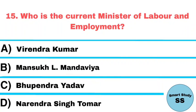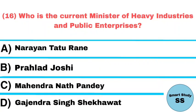Question number 15: Who is the current minister of Labour and Employment? Answer: Bhupender Yadav. Question number 16: Who is the current minister of Public Industries and Public Enterprises? Answer: Mahendra Nath Pandey.